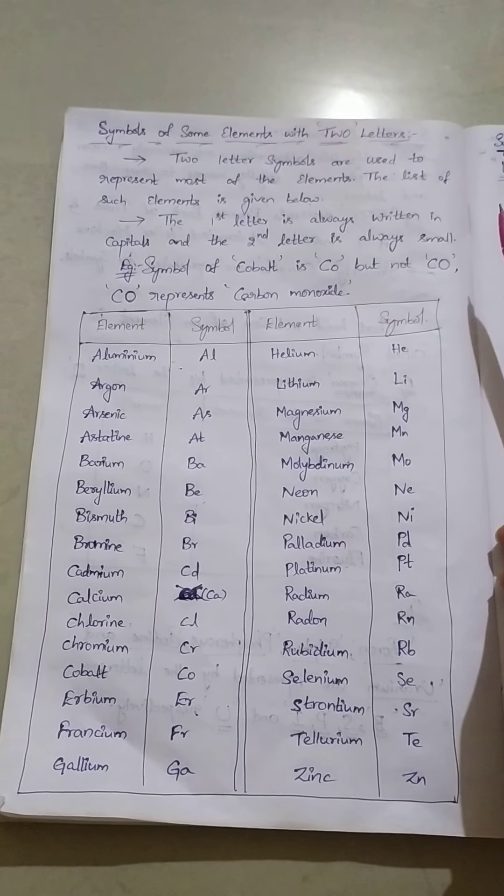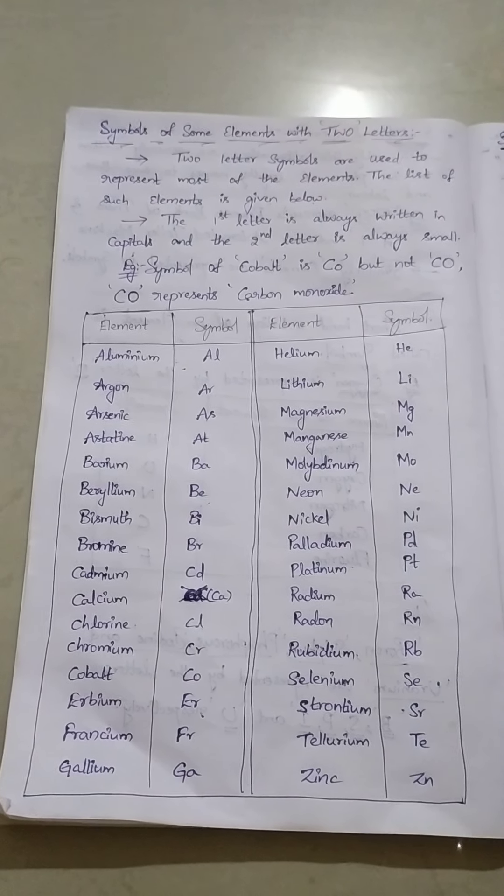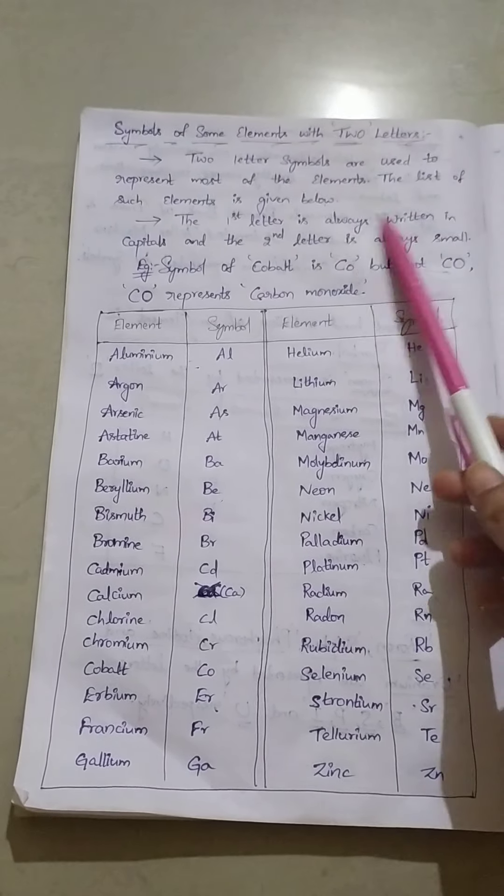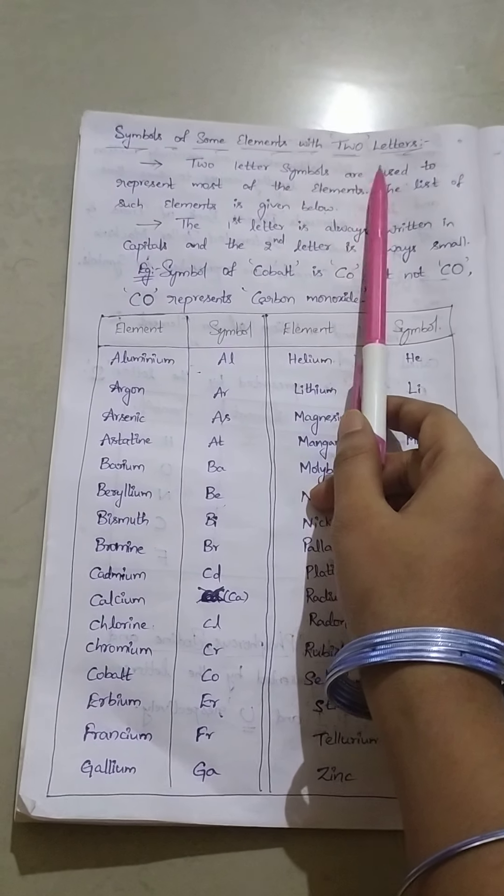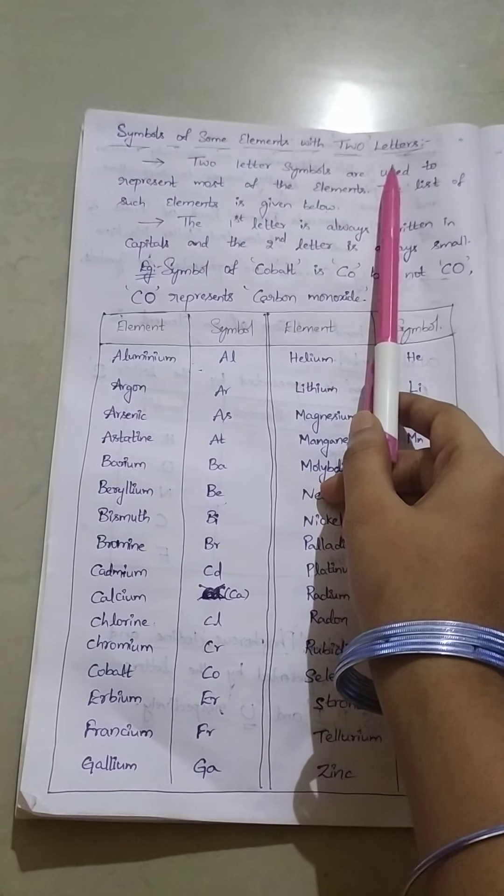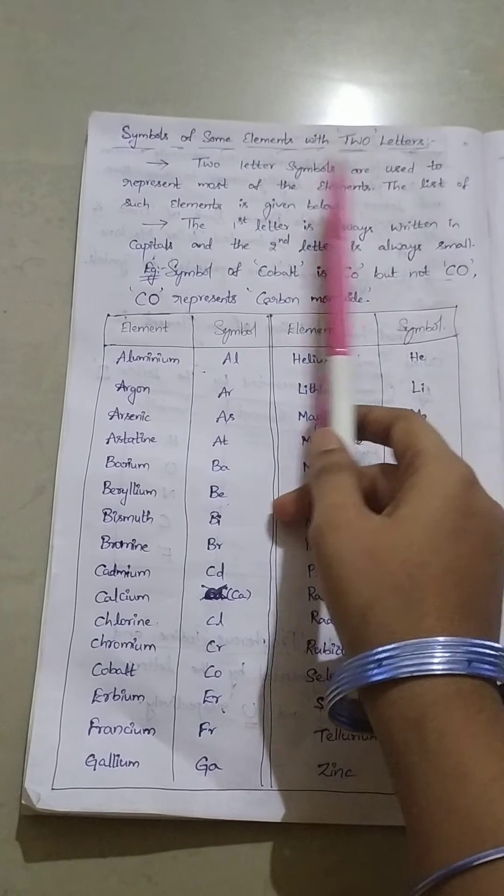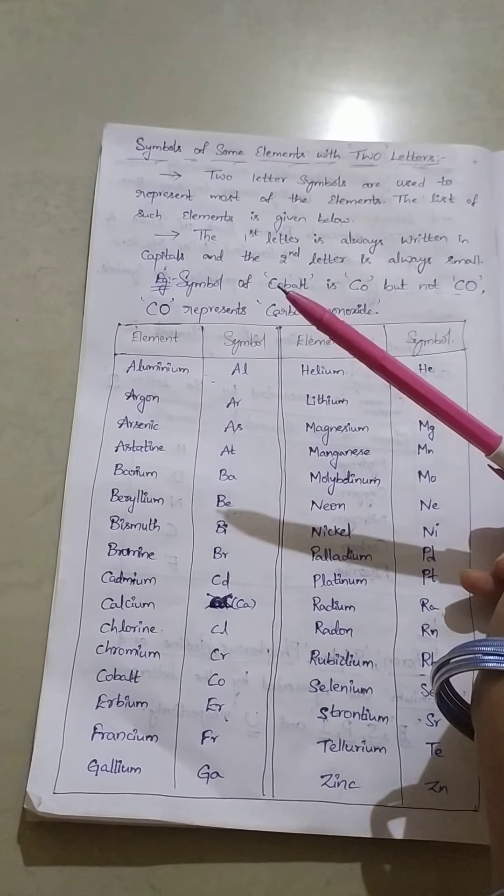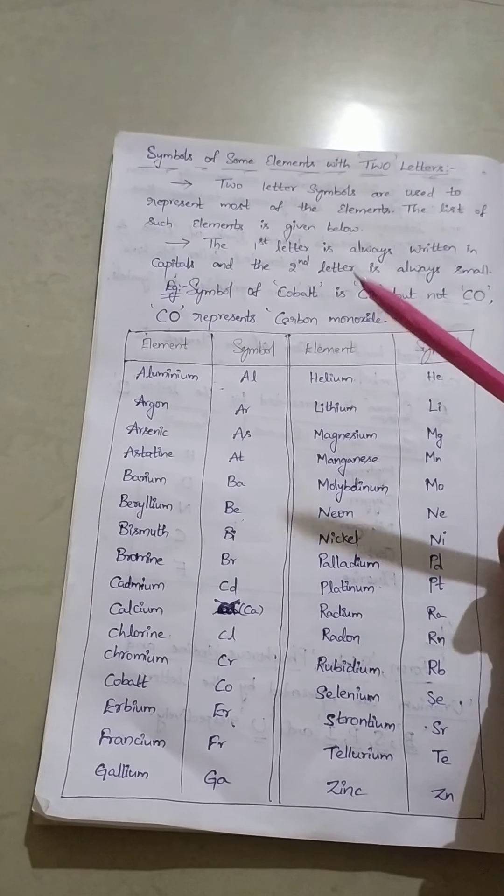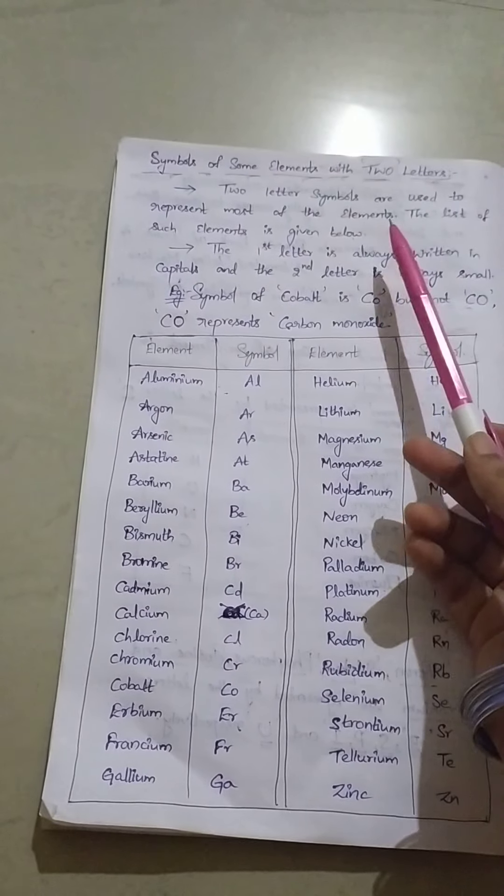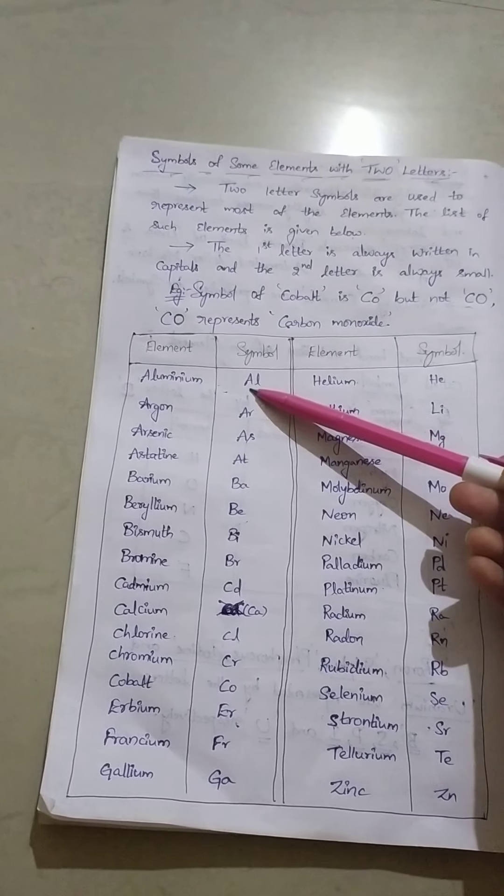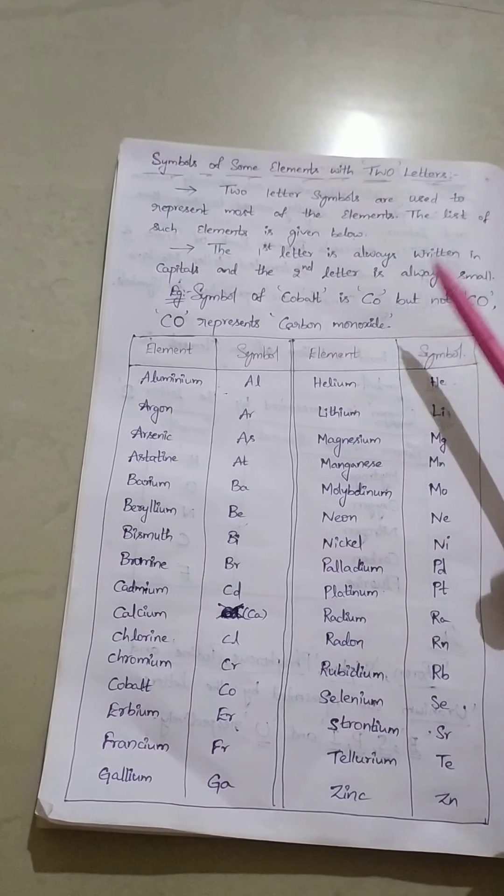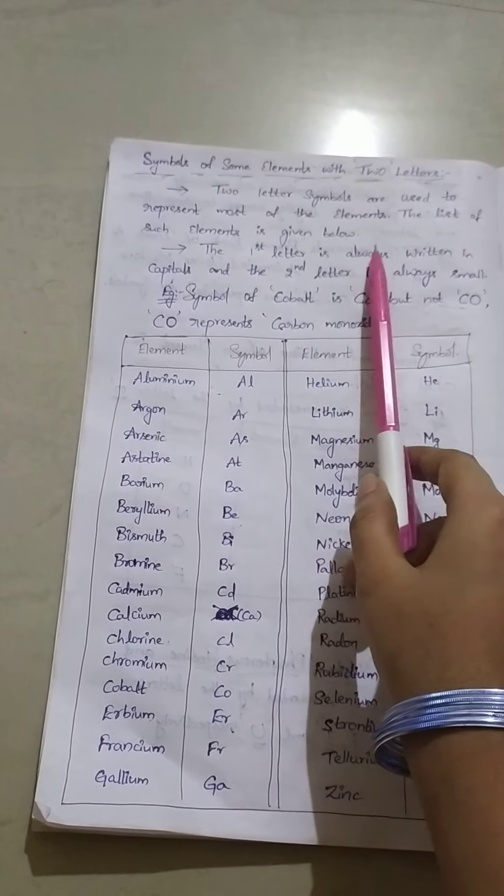Hi friends, welcome. In the previous video we have seen the symbols of some elements with single letters, and now in this video we will see some of the element symbols having two letters. Two letter symbols are used to represent most of the elements. Nearly 117 elements are there now for us in the periodic table. Nearly most of the elements we will see are based on these two letters only rather than single letters. The list of such elements are given below.